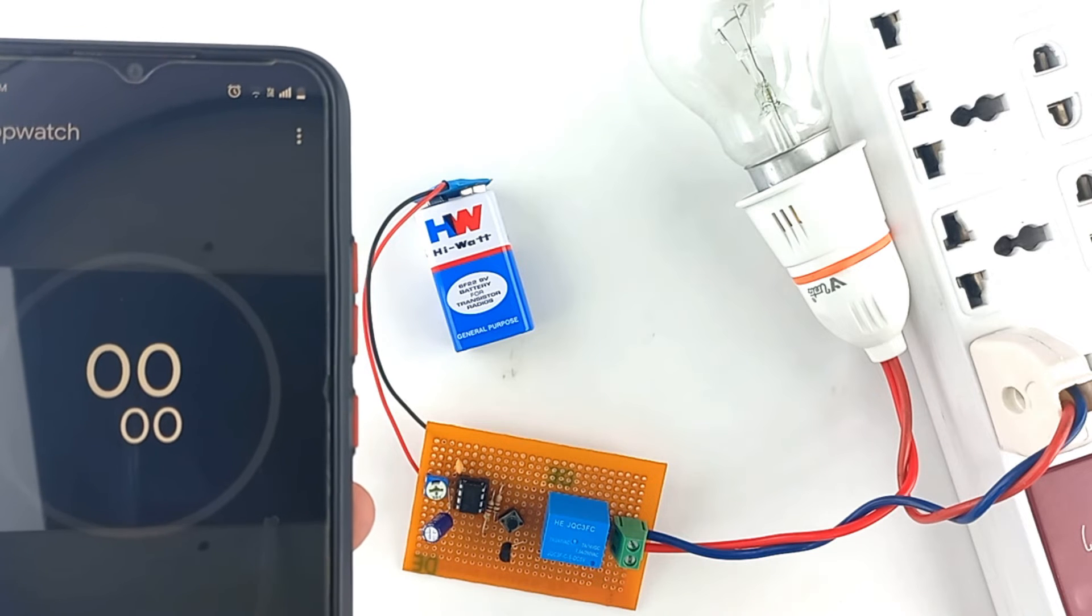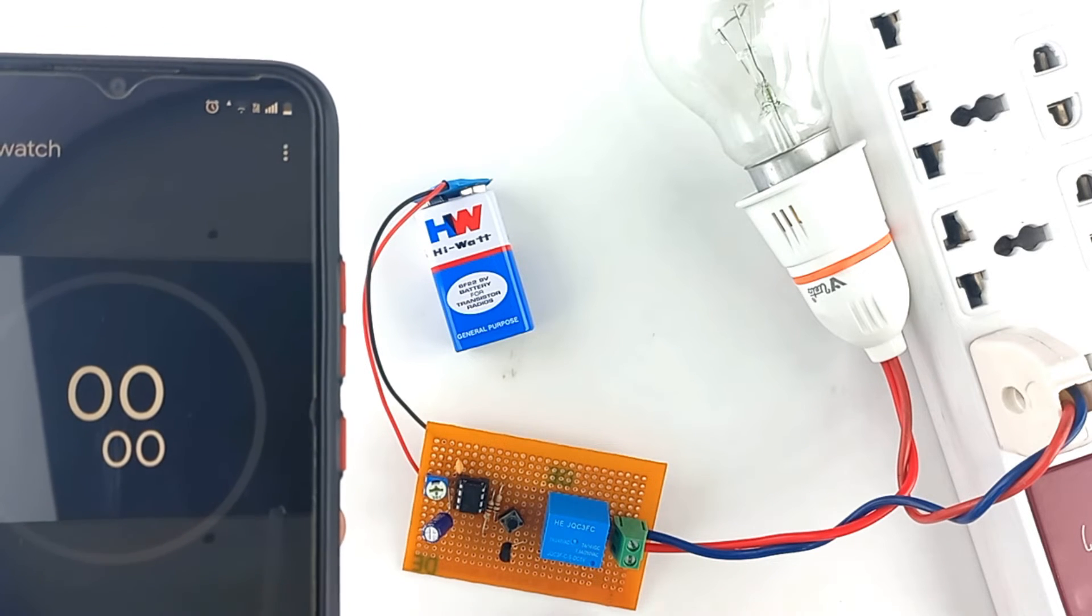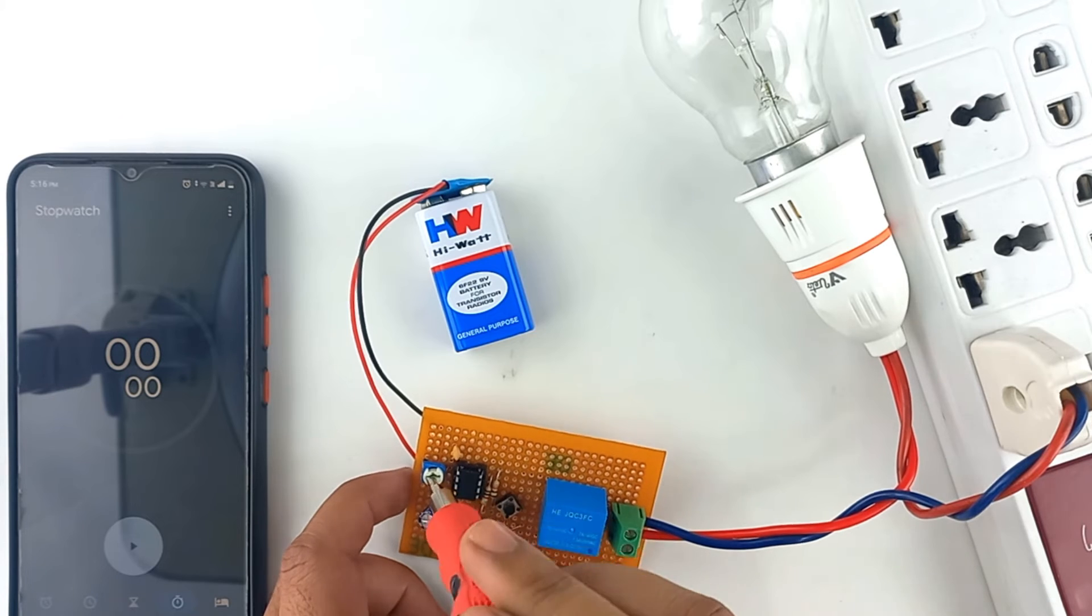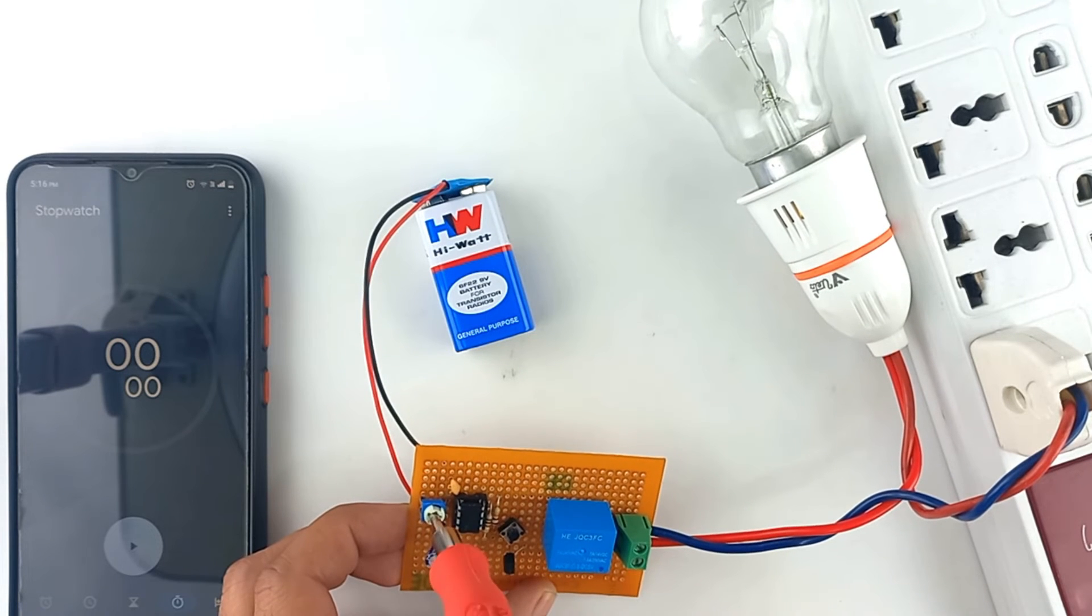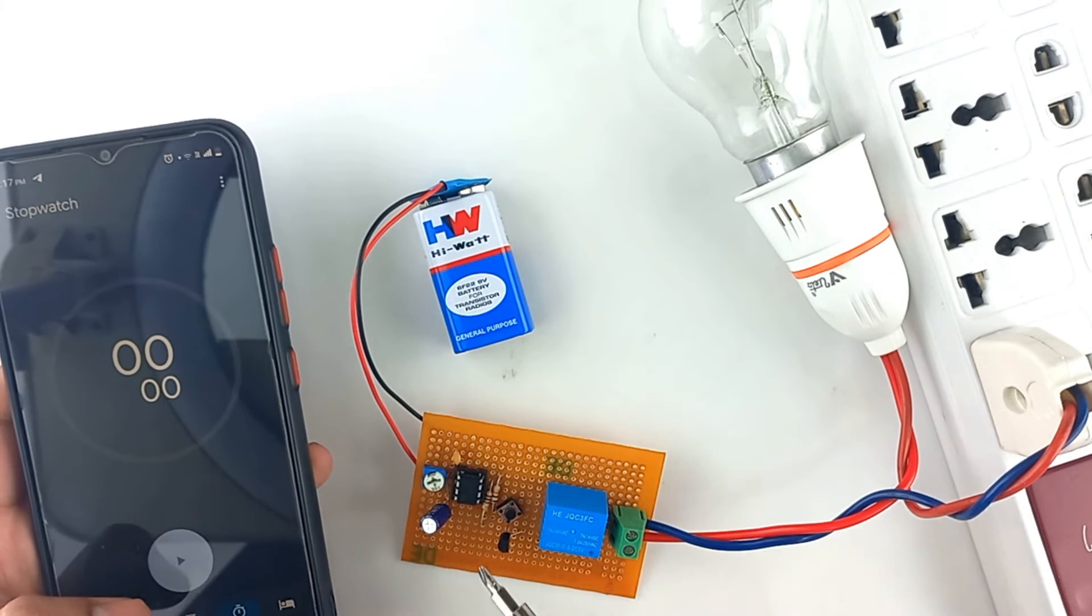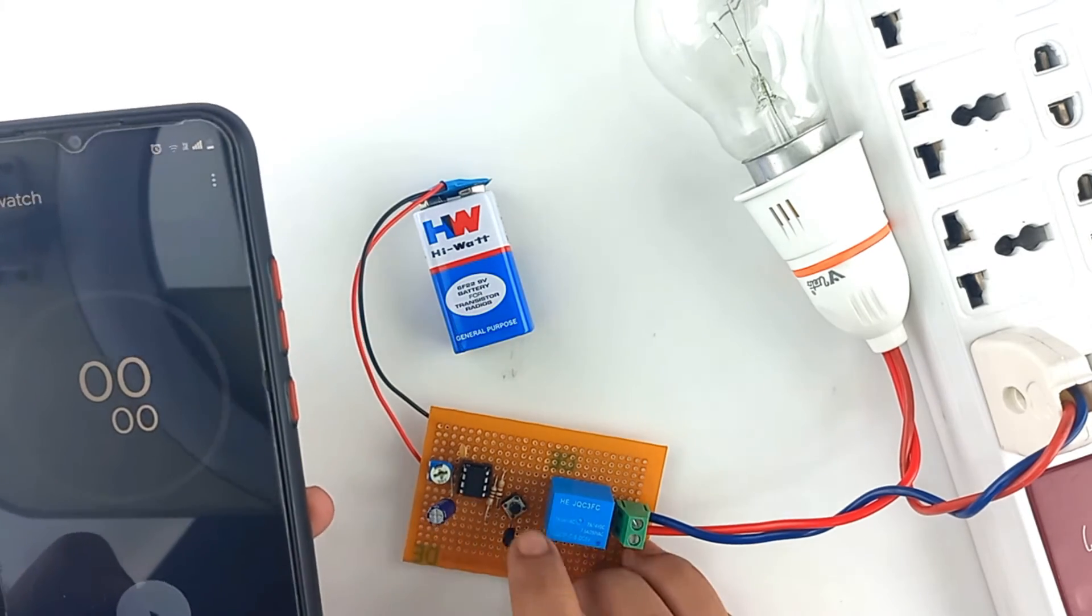Now let's change the potentiometer value and see the variation in seconds. I have changed the value with the help of potentiometer. Now let's test our circuit again.